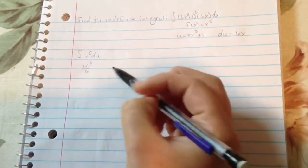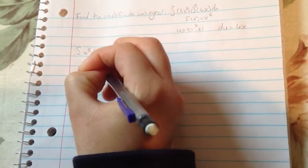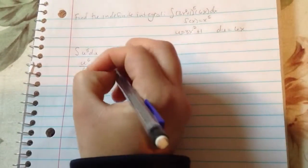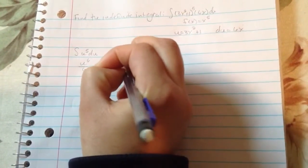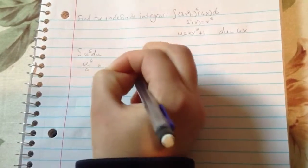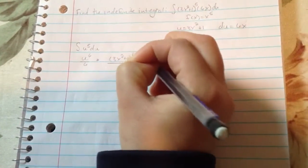Which in our case, when we put u back into the problem, u is equal to 3x squared plus 1 to the 6th over 6 plus c.